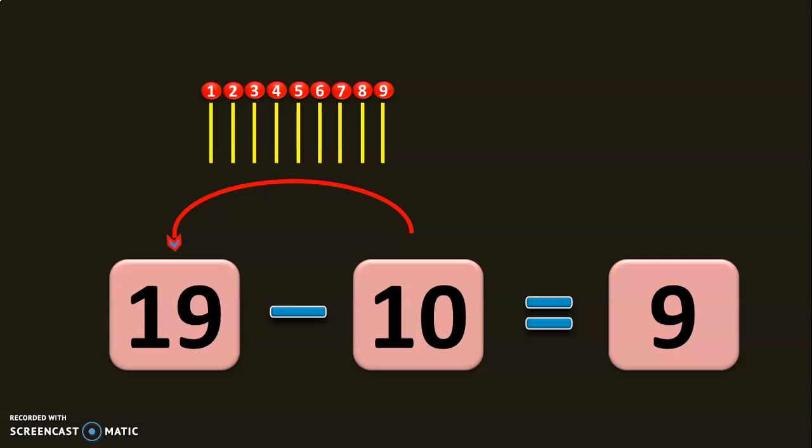So you need 9 numbers to reach from 10 to 19. So the subtraction of 19 minus 10 will give you 9.